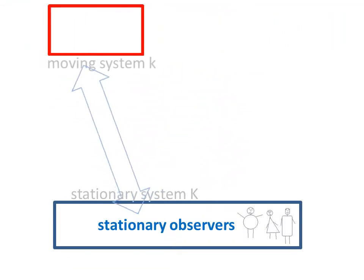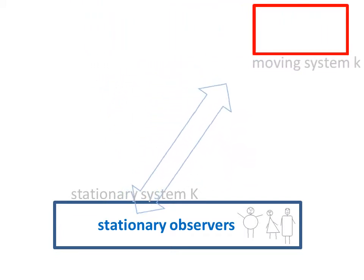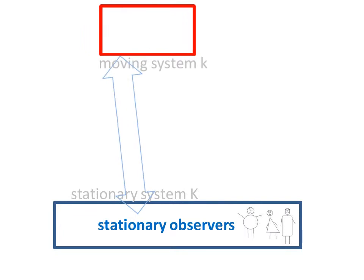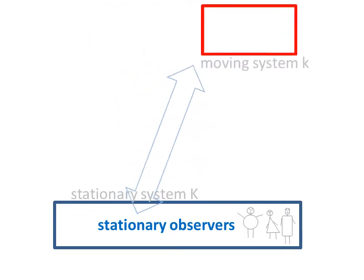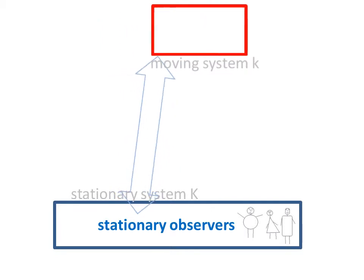This system is moving with respect to a system, denoted by capital K, at rest with which there are observers, the stationary observers, who need to know about the situation in the moving system, lowercase k.